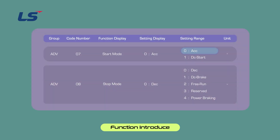ACC acceleration starting method is a general acceleration method. If there is no separate function selection, when the operation command is input, the acceleration time is reflected and acceleration reaches the target frequency. The DC Start method applies direct current voltage to the motor and then accelerates it.